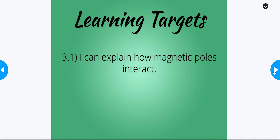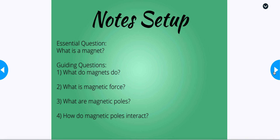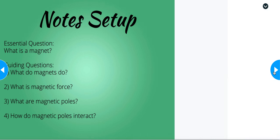Alrighty folks, today we are going to begin our discussion about magnets. You see this little animation right up here — it is a type of putty that has a bunch of little bits of magnet in it. You place a stainless steel ball bearing in the middle and you can see the magnets consume it. Kind of interesting thing to see there. Let's get started.